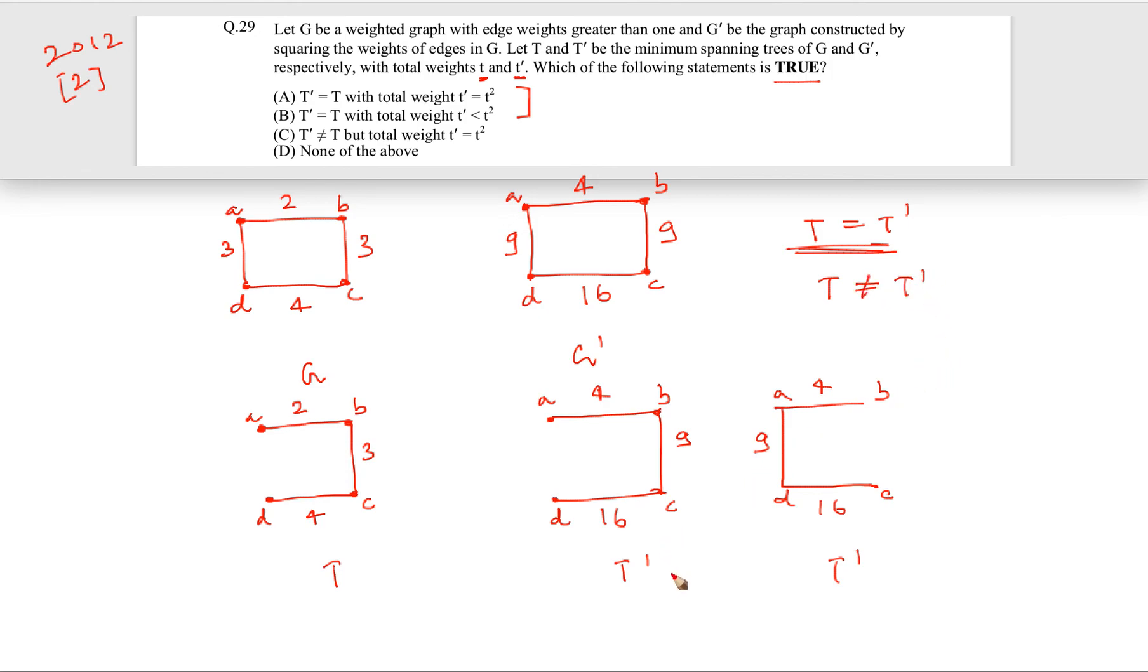Similarly, we cannot also say that T is not equal to T prime. Why? Because there are cases when they are equal. So these two are equal. So we cannot always say that T is not equal to T prime.